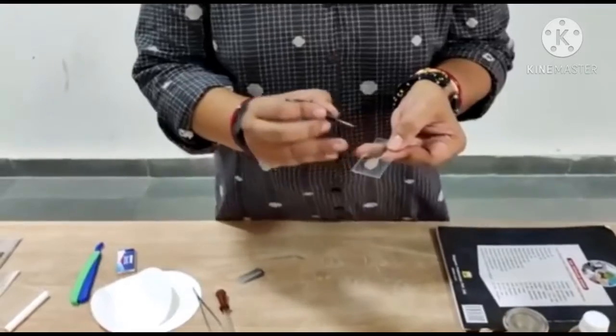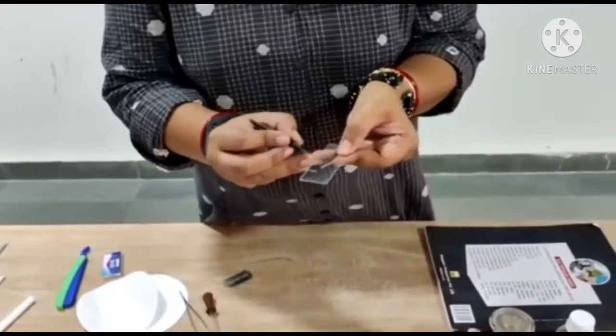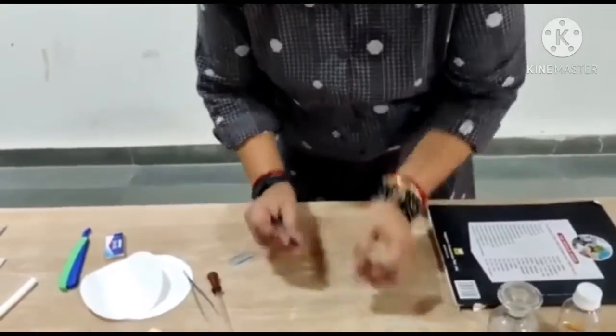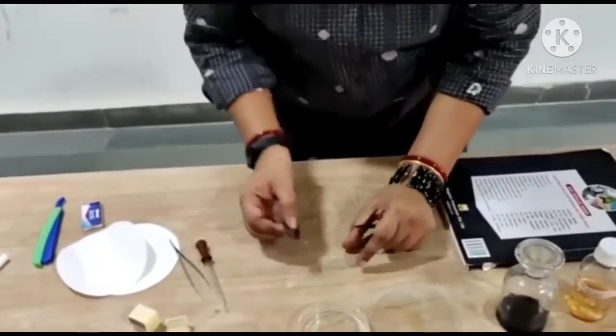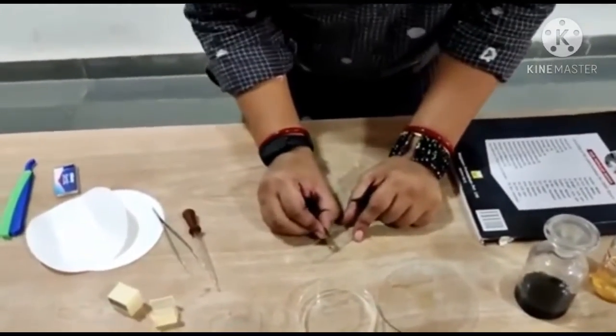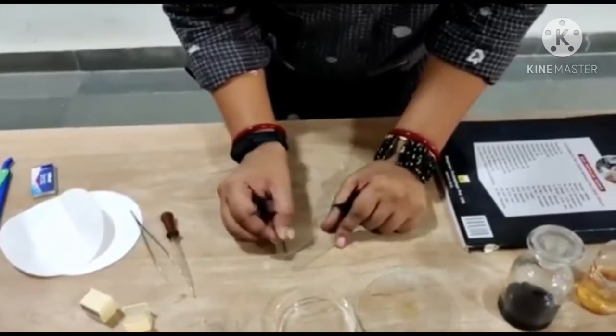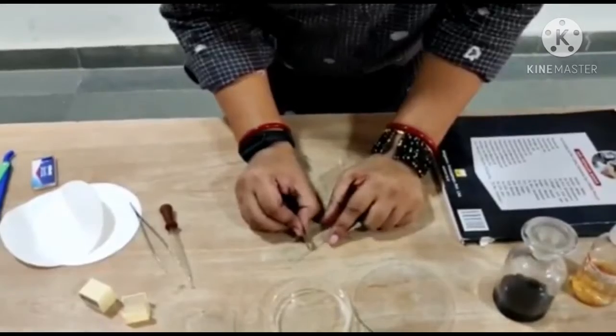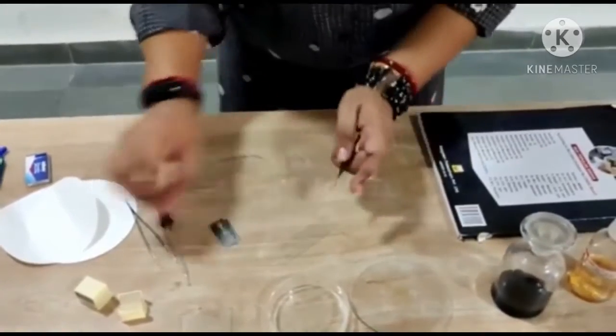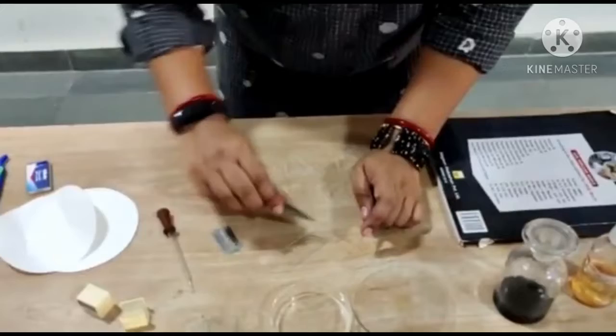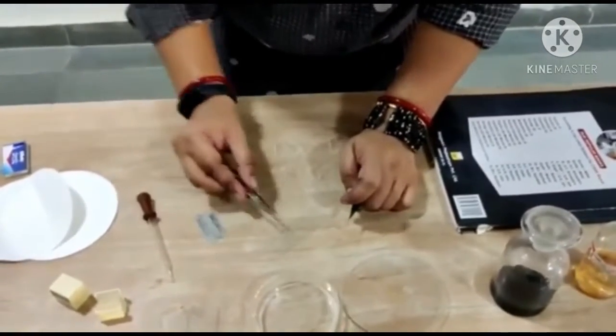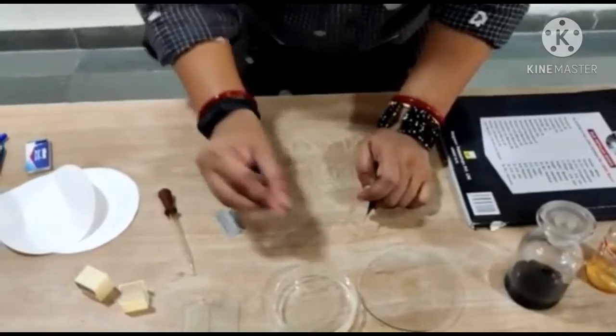Therefore, for mitosis, we will prefer the root tips of plants. We will discard the root cap portion and we will take a small transparent portion just above the root cap. We will discard the upper portion as well as the root cap portion.